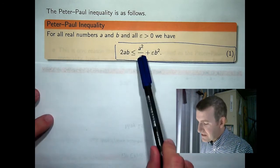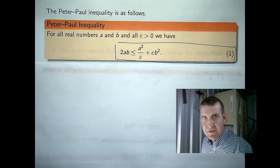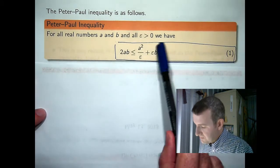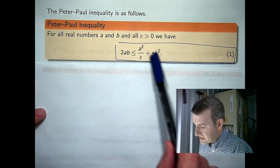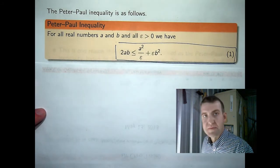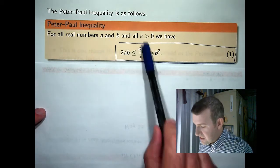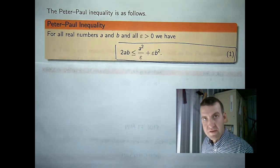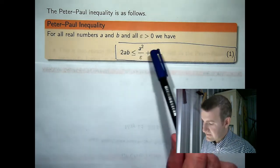Now, the right-hand side is sometimes called something big plus something small. Epsilon here, let's say epsilon is something that you choose to be small. If epsilon is small, then this term will be small, because it's epsilon times b squared. This term here will be large, because we'll be dividing by a small value of epsilon. So that's your large bit, that's your small bit.